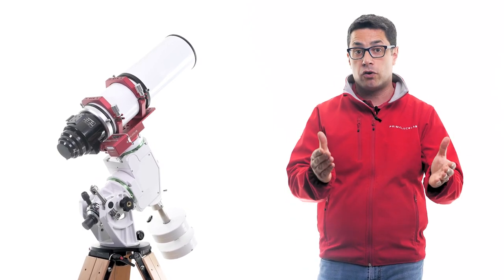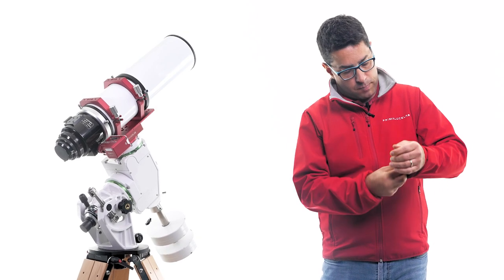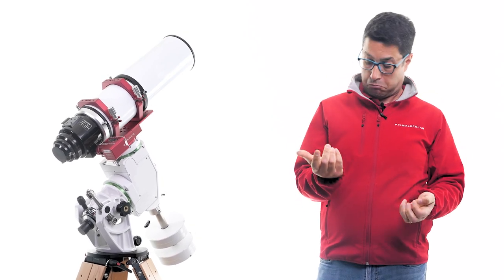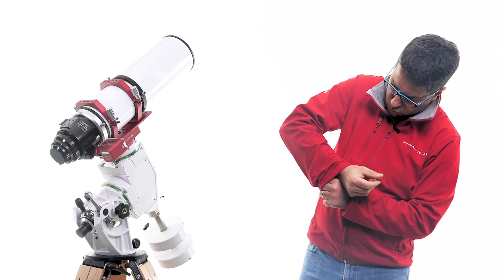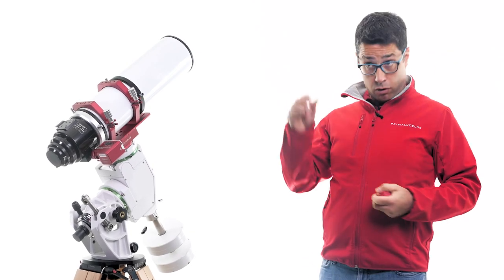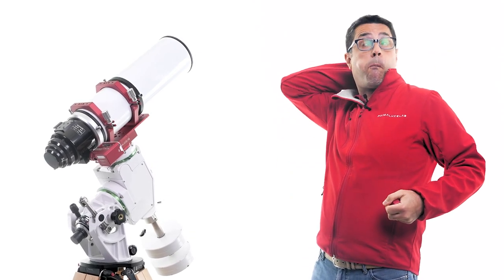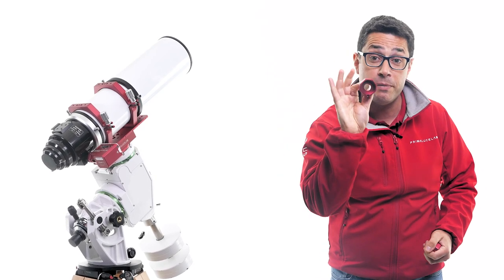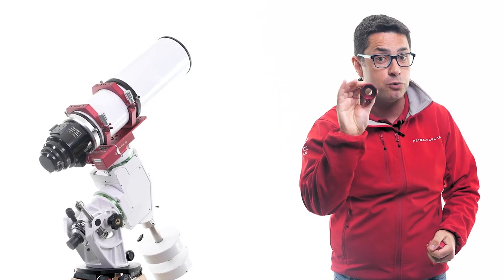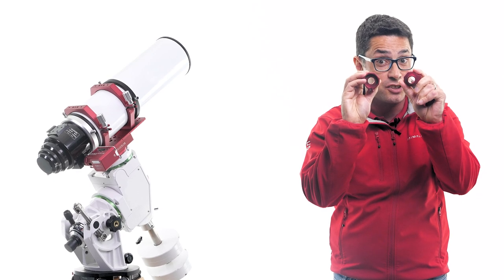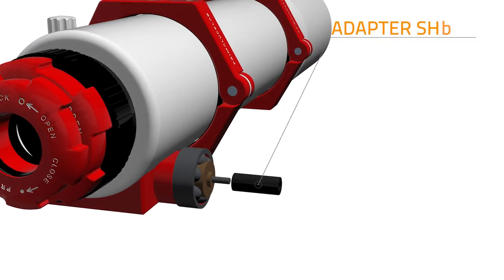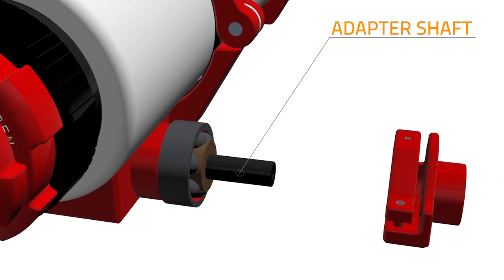We have optional adapters for 26, 33 or 37mm shaft that allow you to use the Sesto Senso. In any case, in the adapter box you will find two parts. One is a longer shaft and the other is the red adapter. First you will have to install the long shaft and lock it with the grab screw.